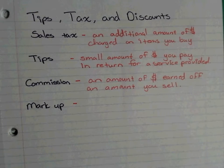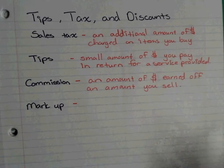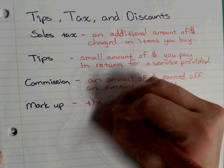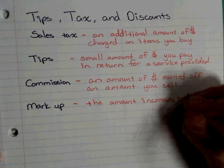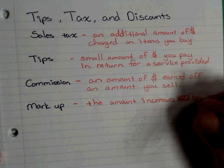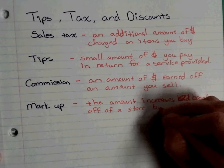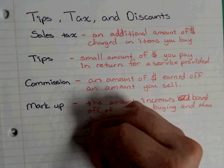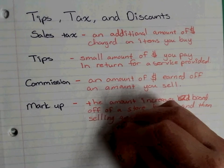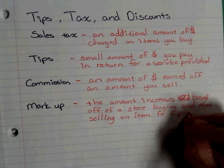Markup: businesses purchase items at really low prices in bulk, then turn around and sell at an increased price to make a profit — that's the markup. It increases based on a store buying and then selling: they purchase it first themselves, then sell the item to make that profit.